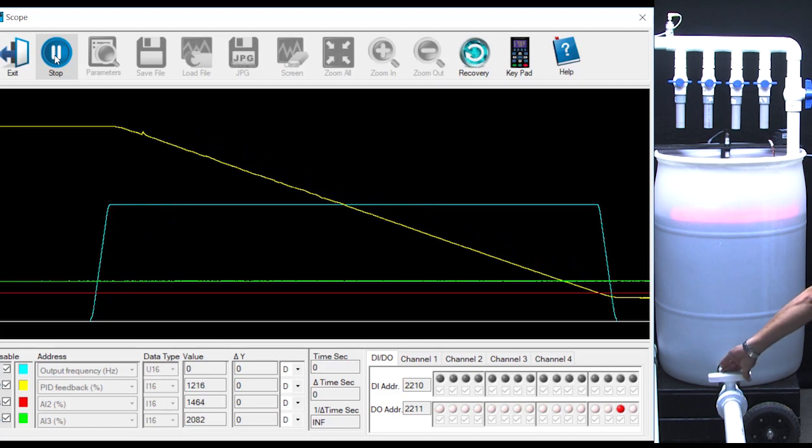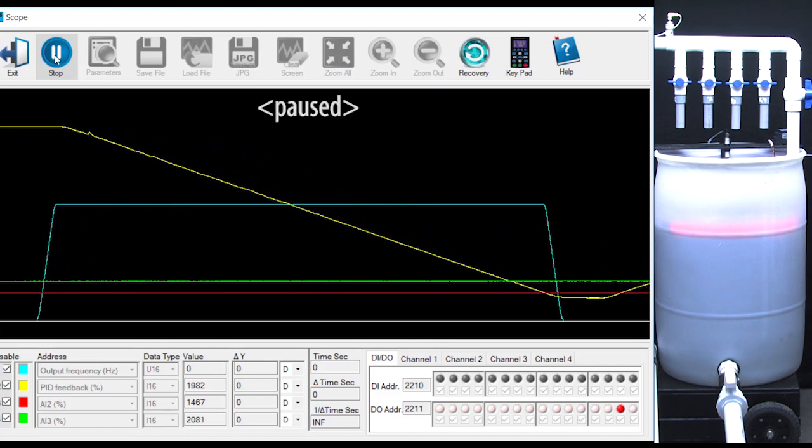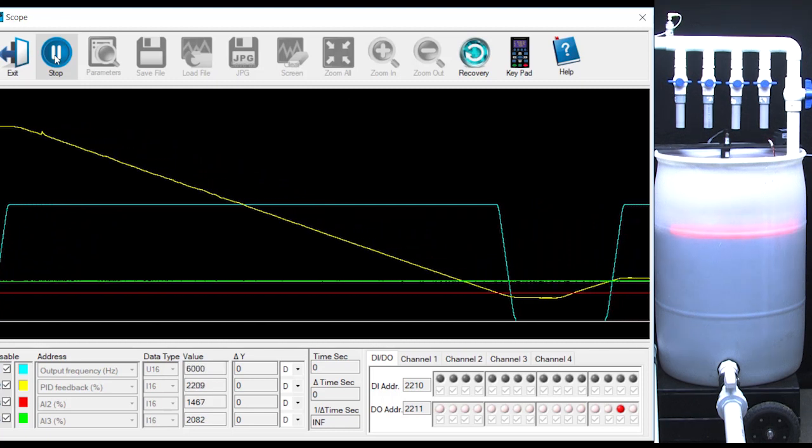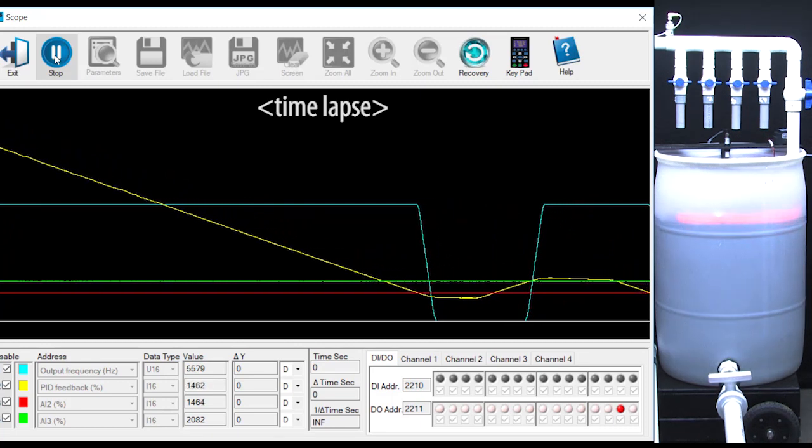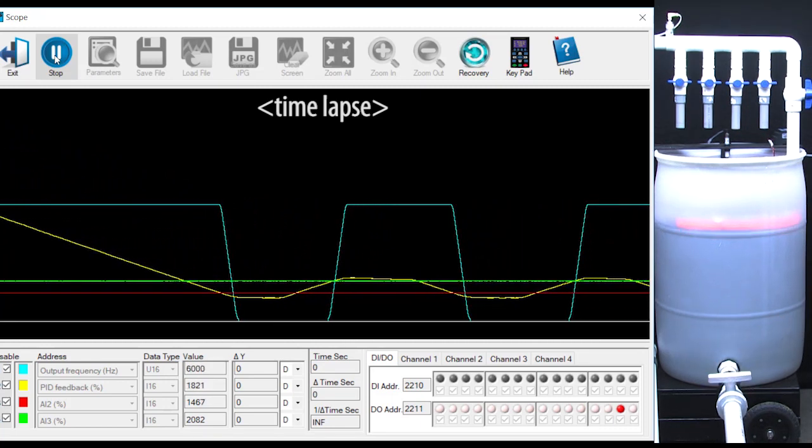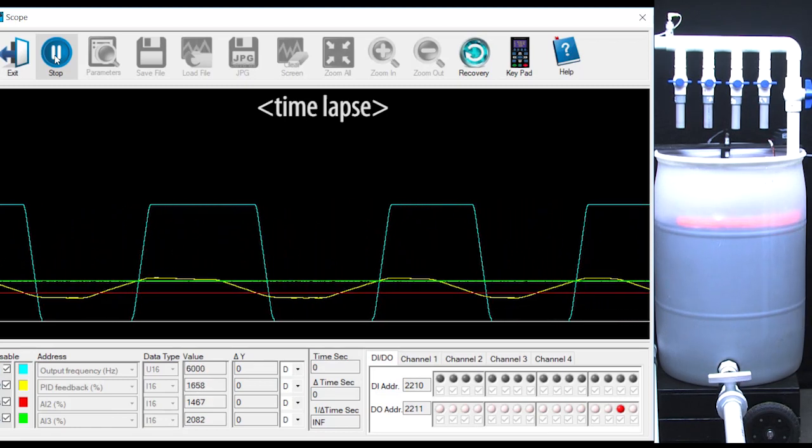I'll open the valve to simulate demand. The yellow process variable starts to increase telling us the tank level is decreasing. When it crosses the green wake up level, the motor starts back up and fills the tank again. Let's speed this up and watch a few cycles. The GS4 drive is now automatically controlling the cycling of the pump in a reverse acting system.